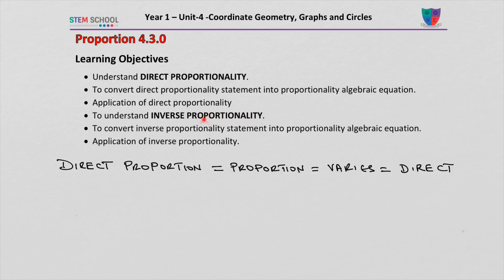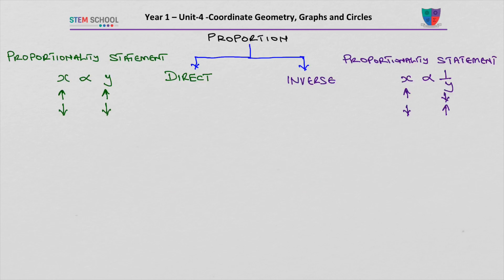Inverse proportionality is just inverse proportionality. But direct proportionality can be referred to as direct proportionality, proportion, varies, or direct. Proportion is split into two: direct proportion and inverse proportion.